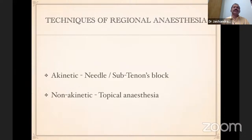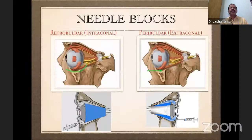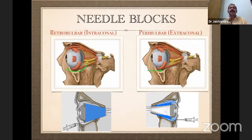From the anatomy, we move on to the techniques of regional anesthesia. It can be divided into two types: akinetic and non-akinetic. With regard to akinetics, there are mainly two types — needle blocks and subtenon blocks, also called cannula blocks. The non-akinetic technique is topical anesthesia. With regard to needle blocks, there are two types: retrobulbar, which is also called intraconal, and peribulbar, which is extraconal.